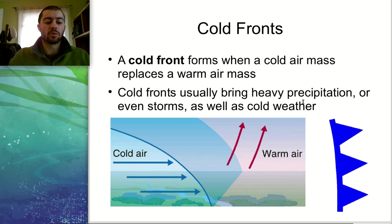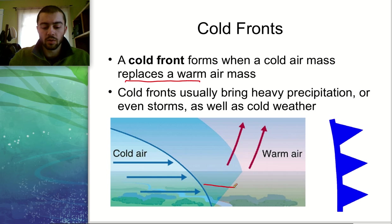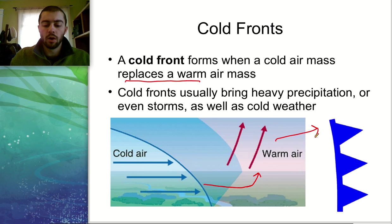The different types of fronts: we have cold fronts, which, like the name gives away, is going to bring a cold air mass in — a cold air mass replacing a warmer air mass. Looking at this picture, the cold air mass is going to come in and push under this warm air mass, displacing or replacing it. Warm air, being less dense, is going to rise, and then the cold air mass pushes its way underneath and replaces it. That's what a cold front is.